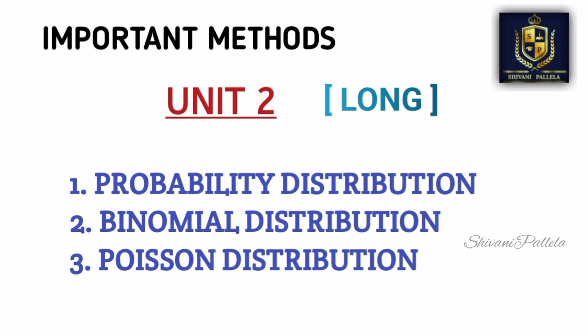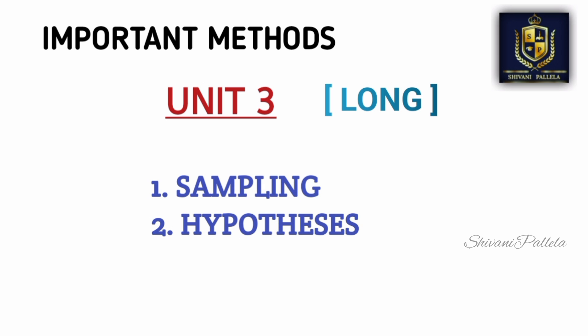From Unit 2, the important probability distribution problematics are Binomial Distribution and Poisson Distribution. One problematic will be asked — either binomial or Poisson — and Normal Distribution is also there. If you are perfect with all three methods, you can attempt the 8-mark question.